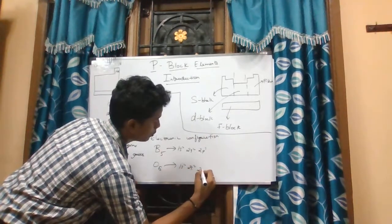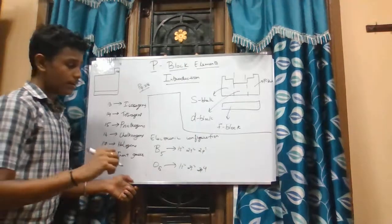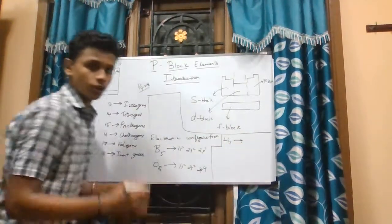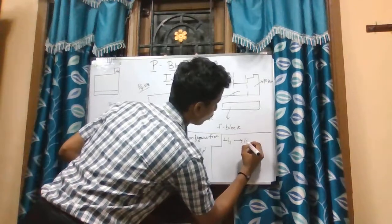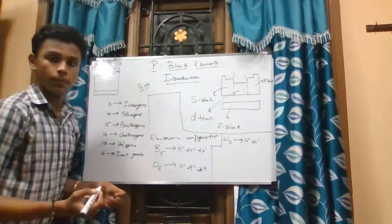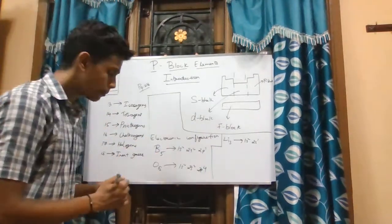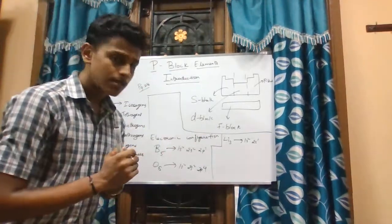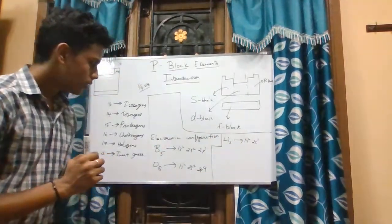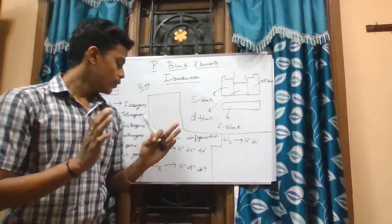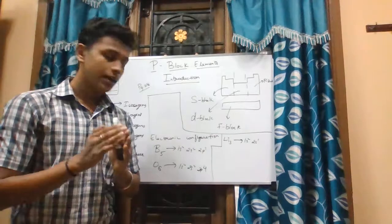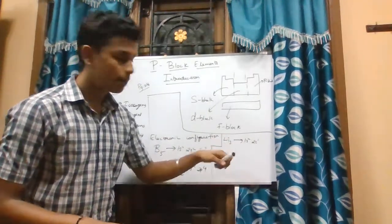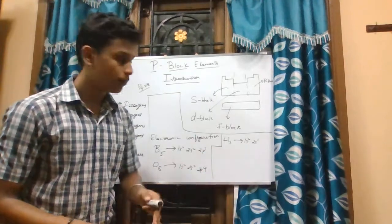The electronic configuration of oxygen is 1s² 2s² 2p⁴. Let us take another example: lithium (Li, atomic number 3) has the configuration 1s² 2s¹. In the boron and oxygen examples, the valence electrons occupy the p-shell, so they belong to the P-block. For lithium, the valence electron occupies the s-shell, so it belongs to the S-block. The valence electron determines which block an element belongs to.